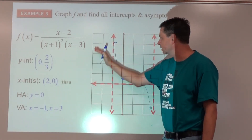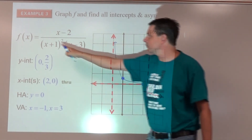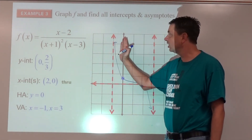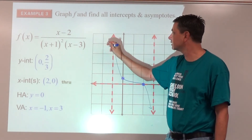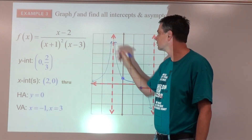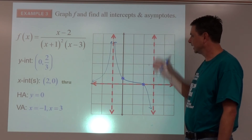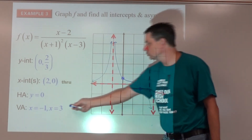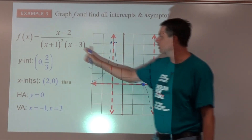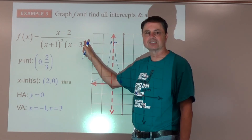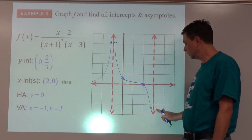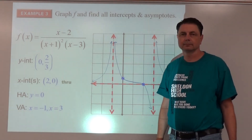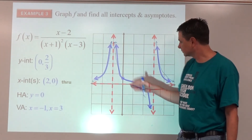Looking at the outer sections: the asymptote at x equals negative one came from a factor with an even exponent, so behavior is the same on both sides. If we're high on one side, we're also high on the other. With two vertical asymptotes, there are three parts to the graph. The asymptote at x equals 3 has an odd exponent — behavior is opposite. If we're low on the left side, we need to be high on the right side.